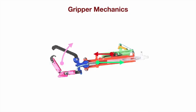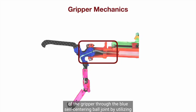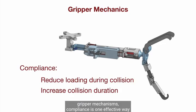The claw is connected to the rest of the gripper through the blue self-centering ball joint by utilizing the torsional spring stiffness of a compression spring. Gripper mechanism compliance is one effective way of reducing the load on the drone during the collision. Additionally, including compliance increases the collision duration.